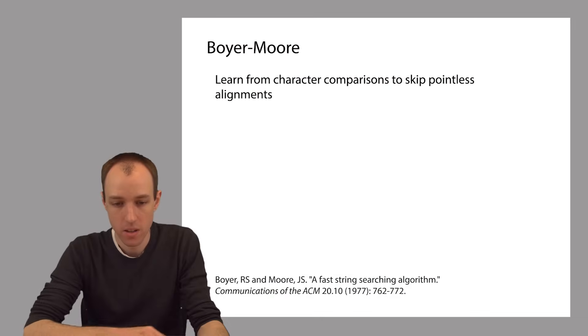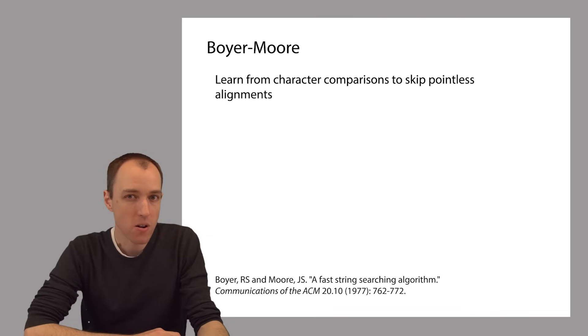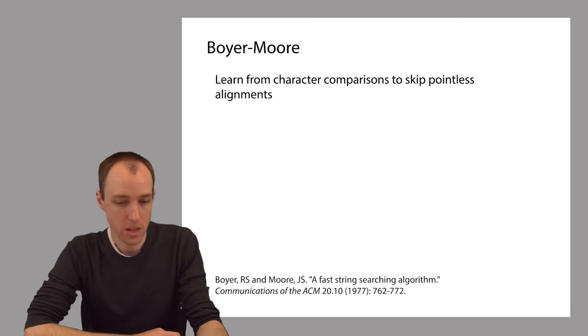This can be generalized into a principle used in many situations, and in fact Boyer-Moore uses this principle to the maximum possible extent. The principle is that we're going to learn from the character comparisons we do in order to skip alignments that provably won't result in a match. The first thing to know about Boyer-Moore is that we're going to try alignments in left-to-right order, as we did with naive exact matching, but we're going to try character comparisons in the opposite order — in right-to-left order.